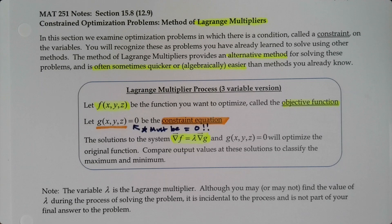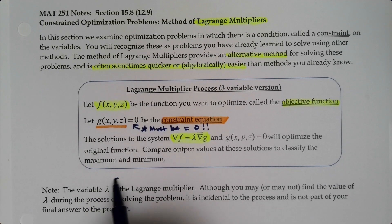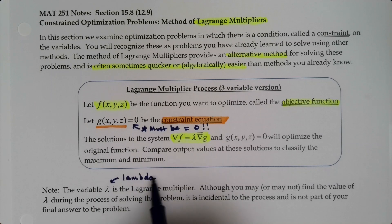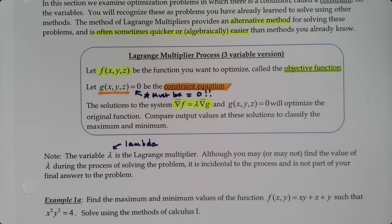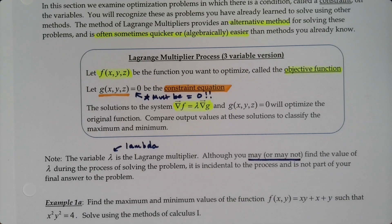We compare the outputs of these solutions to classify the maximum and minimum. The variable lambda is a Greek letter — it's the 'L' sound. During the process of solving the problem it's kind of not that important; it's incidental to the process, so it's not part of your final answer. Sometimes you'll find it, sometimes you won't — it doesn't really make a difference. You only find it if you need to.